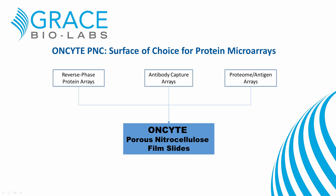Primarily, there are three types of protein arrays, and there are many microarray binding surfaces available, many of them adequate for one application or another. Today I'm going to show you why on-site PNC is the surface of choice for all of these applications.